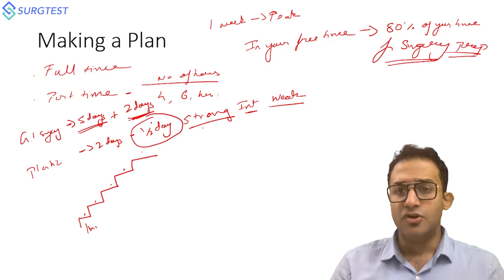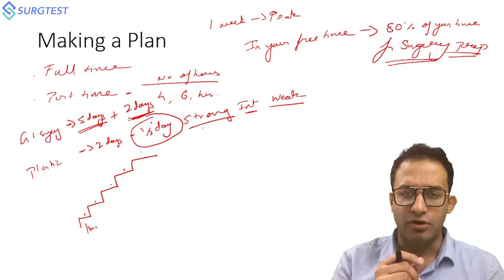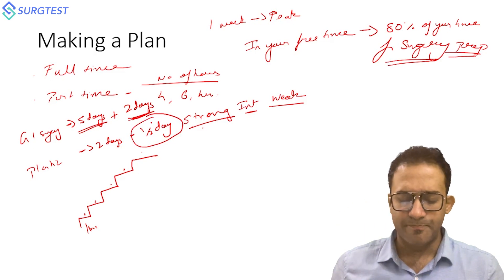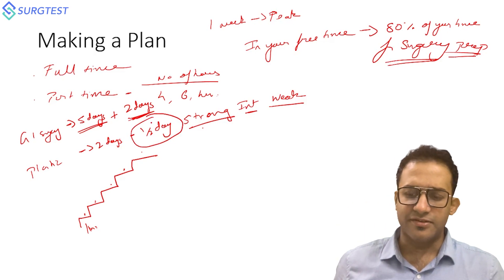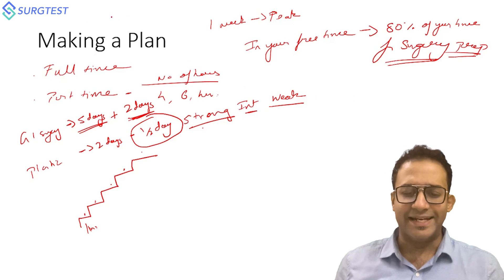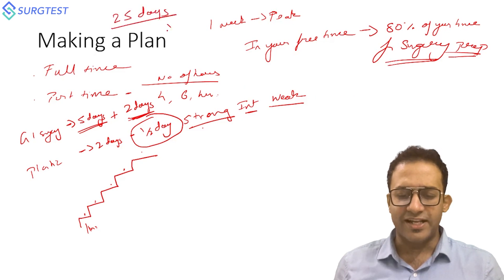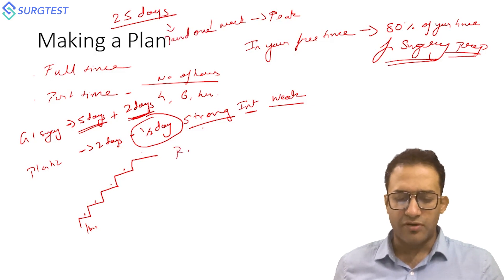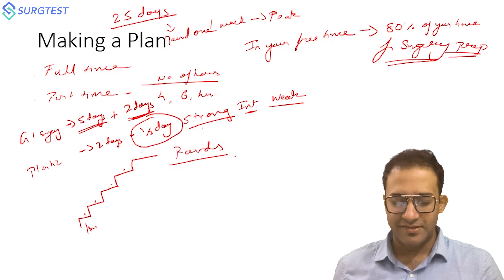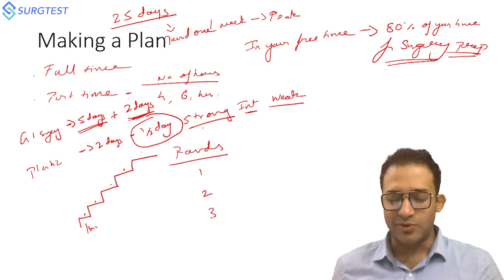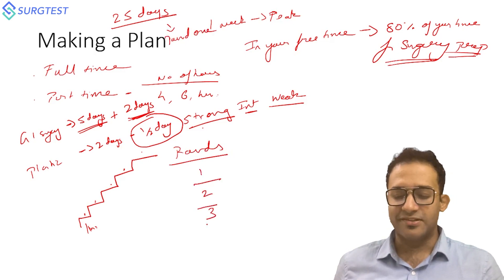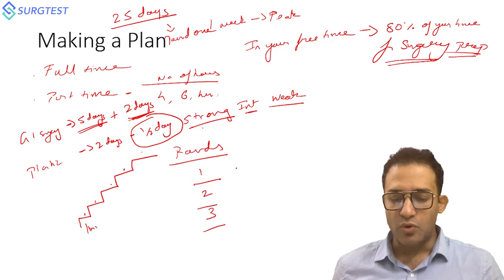When should you have completed one full round during these 45 days? You should have completely read Bailey in full ideally within 25 days. So 25 days round one. Let's split this into rounds - round one, two, and three is what I would advise if you are preparing for your NEET SS. Round one should take 25 days.